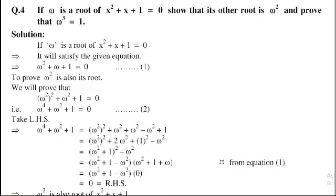Take the left hand side: omega⁴ + omega² + 1. Here omega⁴ can also be written as (omega²)². Adding and subtracting omega², we get (omega²)² + omega² + omega² + 1 − omega², which equals (omega²)² + 2omega² + 1 − omega².